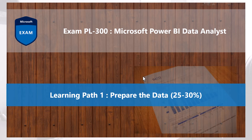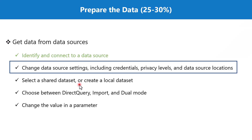Bismillah Rahman Rahim. Hello everybody, welcome back to the PL-300 exam preparation series where we are looking at the first learning path: prepare the data. In this video we are going to talk about the second topic of the section — get data from data sources — and this topic is: change data source settings including credentials, privacy levels, and data source locations. This video has been divided into two parts; in this part we are going to cover the data source settings and data source locations, and in the second part I'm going to cover the credentials and privacy levels.